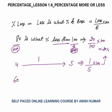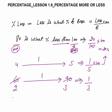Another example: 60 is how much percent less than 90. Rather than calculating the actual value, take the ratio. 2 is to 60 and 3 is to 90, so the ratio is 2 to 3. Calculate 2 is what percent less than 3. 2 is 1 less than 3. Less upon base: 1 by 3 into 100 gives 33 and one-third percent.